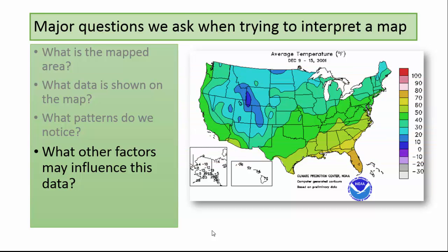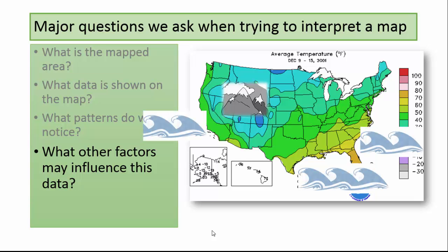Recall from your examinations of maps that there are a series of mountains in this region — the Rockies. Perhaps areas that are higher in elevation are colder. Also recall that the Atlantic Ocean borders the continental U.S. on the eastern coast, and the Pacific Ocean borders the western coast. Perhaps being next to the ocean has an influence on temperature. Recall your observations from Lab 1 that the oceans off the east coast of the U.S. are warmer than the ocean off the west coast. Perhaps that has something to do with the fact that the land bordering the ocean off the east coast is warmer than the land bordering the ocean off the west coast.